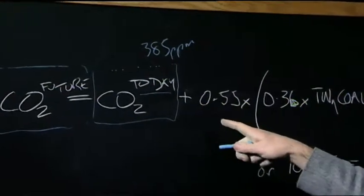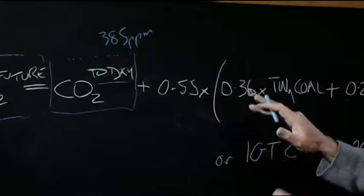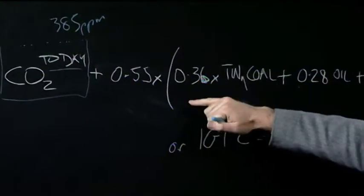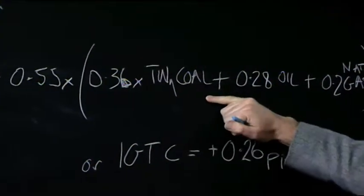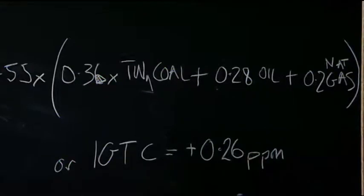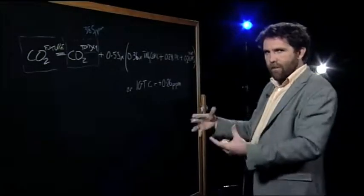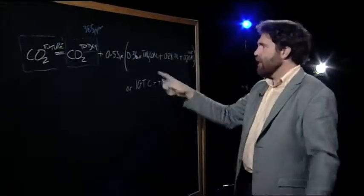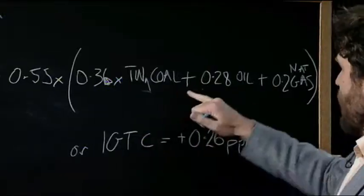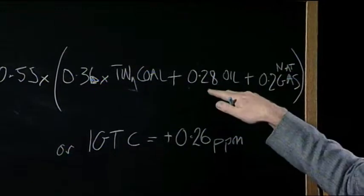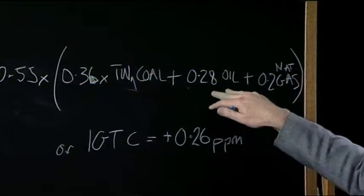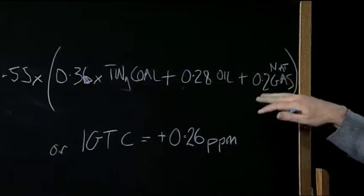Plus 0.55, this is just a constant, times the number, this is 0.36, the number of terawatt years of coal. Terawatt years of coal, it's a huge amount of energy. If you made one terawatt of energy with coal for one year, that's the amount of energy. Plus the same sort of constant for oil. Oil is 0.28 because it produces less carbon per terawatt year of fuel, and 0.2 for natural gas.